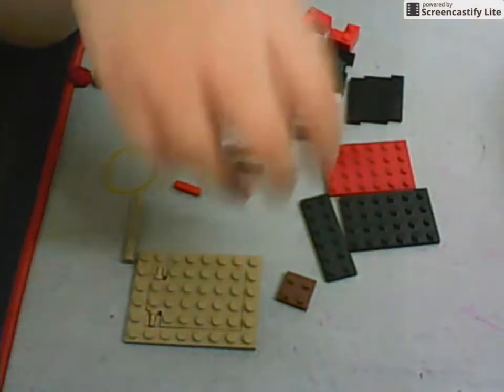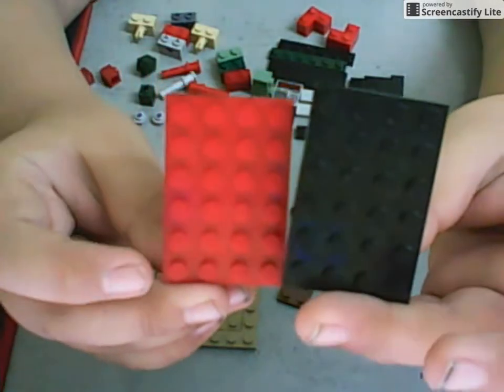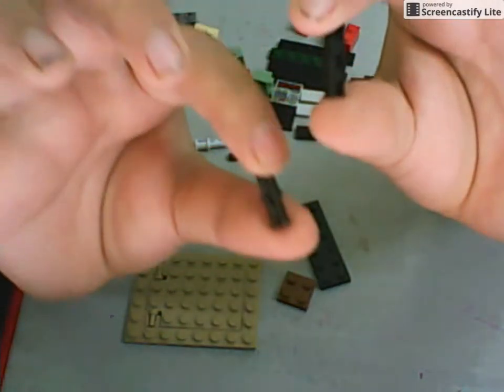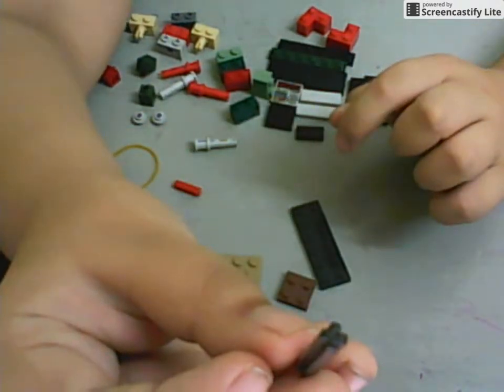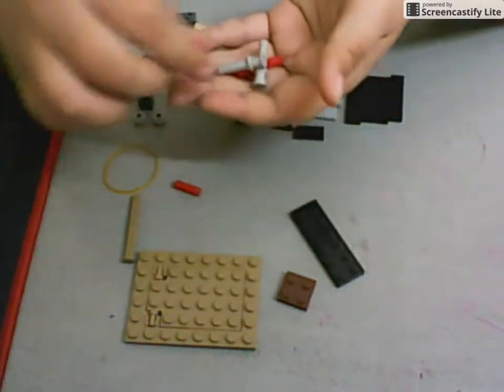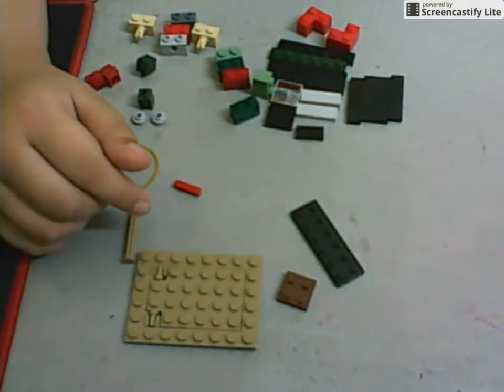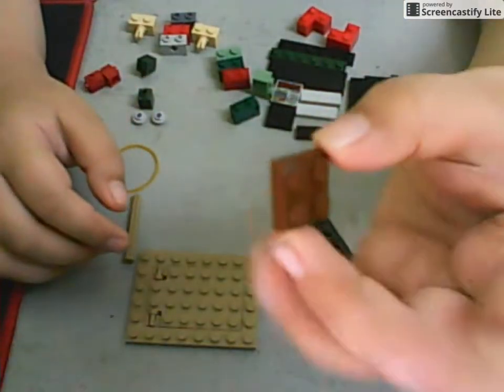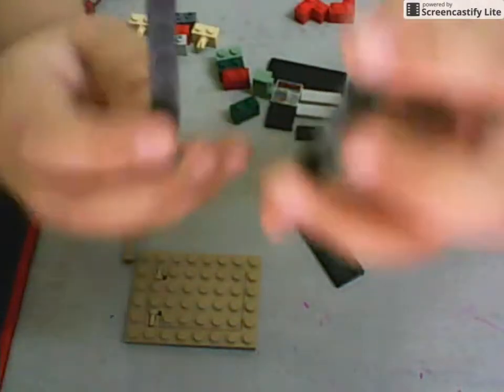Two of them, and two of the four by six, two of these pieces, one of this, four of these, one of this, one of the two by two, one by six.